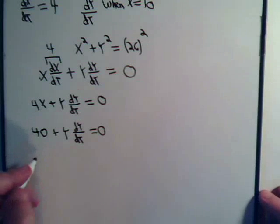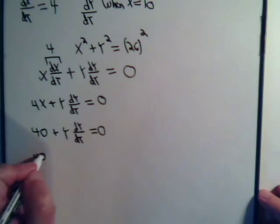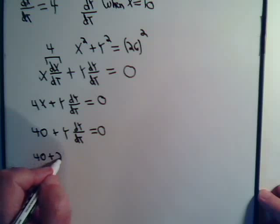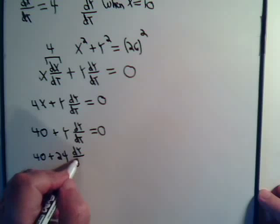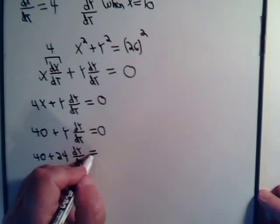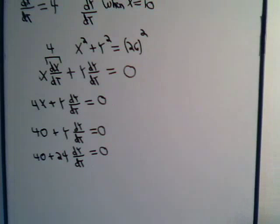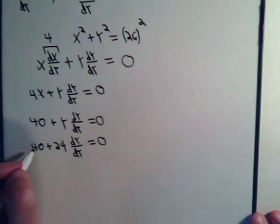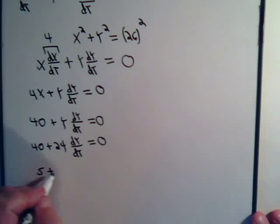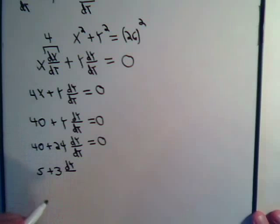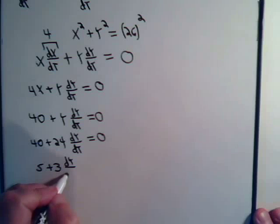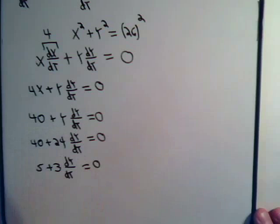So we have 40 plus 24 times dy/dt equals 0. And let's see, can we divide both sides by 8? That will give us 5 plus 3 times dy/dt equals 0.